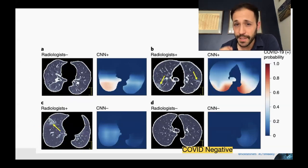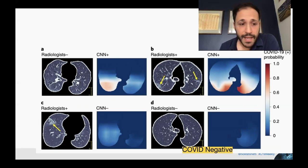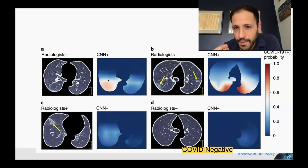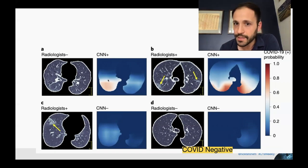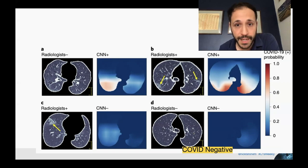Here are some images that show what the algorithm saw in the CT scan that made it think a patient was SARS-CoV-2 positive, compared to what the radiologist saw. A is an example of when the radiologist might have missed the diagnosis, and here's where the convolutional neural net is saying there's a feature indicating this patient might have the virus. Here's one where they match up more closely, and one where they're both negative and both predict negative really well.